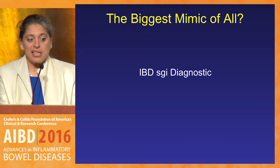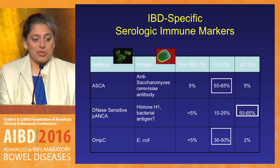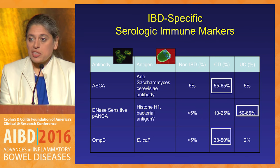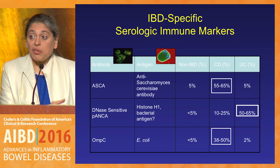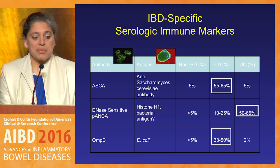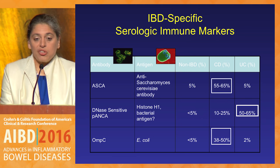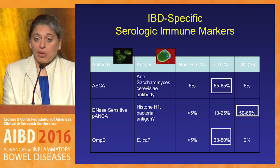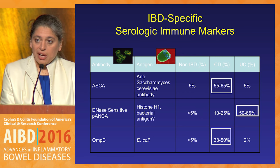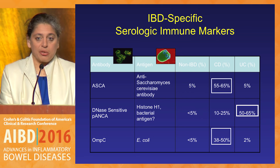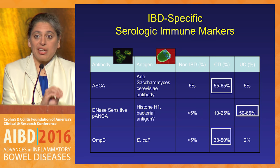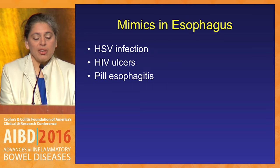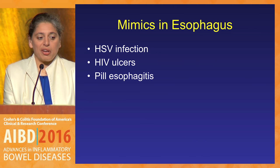Maybe the biggest mimic of all is the IBD SGI diagnostic panel, because the serologic immune markers — the non-proprietary ones — ASCA you can see half of the time in Crohn's, P-ANCA you see half the time, which means the other half of the time you don't see these markers, and OPSI is again about half the time. These are very helpful markers when you're trying to put into context what you are seeing and what the patient is telling you, but they are not diagnostic. So the patient who is diagnosed with IBD based on these alone doesn't have IBD yet.